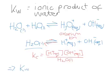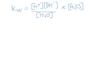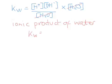KW is equal to KC multiplied by the concentration of water. So we can say KW is equal to this expression, and we can then cancel out the waters. This now gives us our final definition for the ionic product of water, where KW is equal to the concentration of the hydrogen ion multiplied by the concentration of the hydroxide ion.